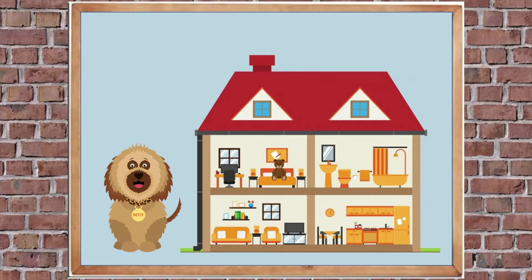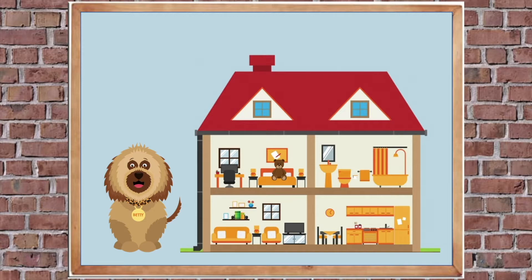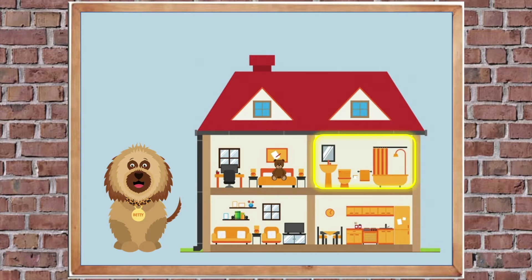Here's another one — which room is next to the kitchen? Here's a clue: it's under the bedroom. Yes, it's the living room! Next: which room is next to the bathroom? Yes, it's the bedroom! Last one — which room is above the kitchen? Yes, it's the bathroom!